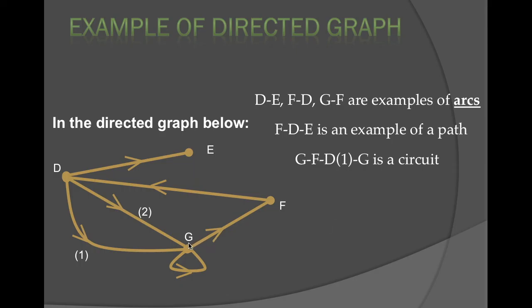And G, F, D going through the 1 here, not the 2. So G, F, D, 1, G is a circuit. We're starting and ending at the same vertex and we're following our direction of the arrows.